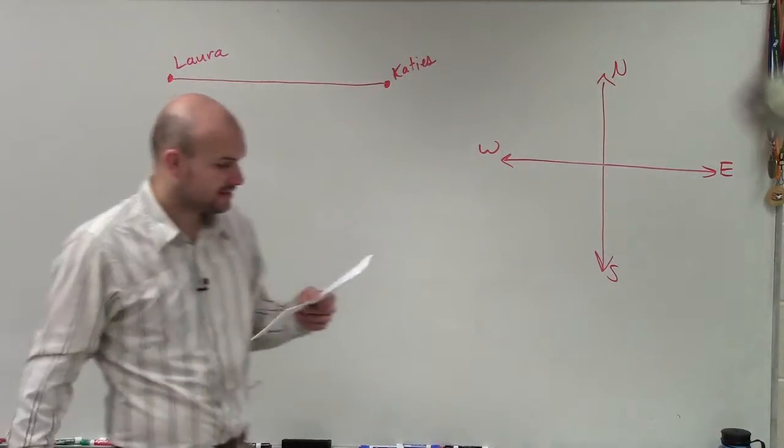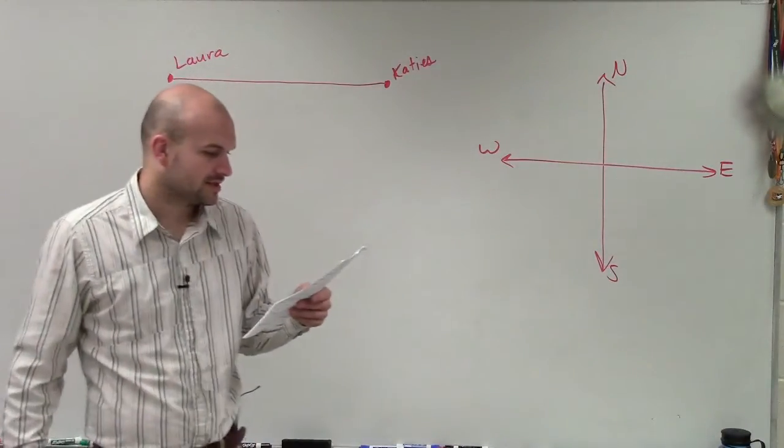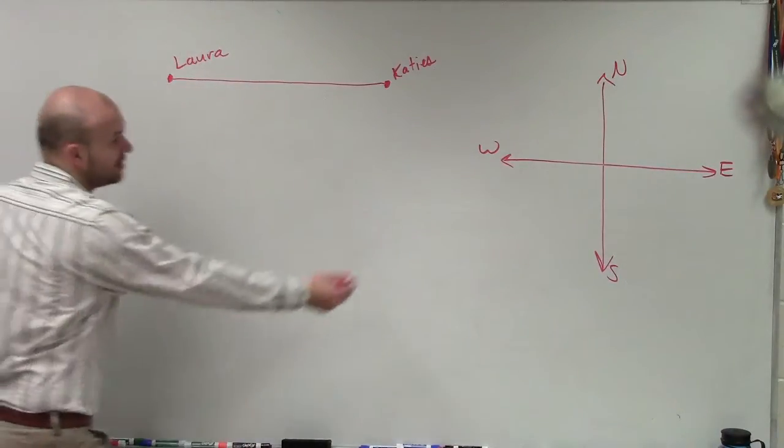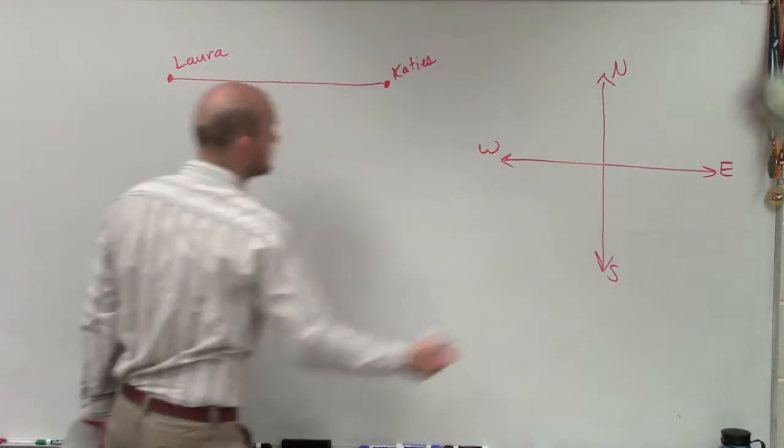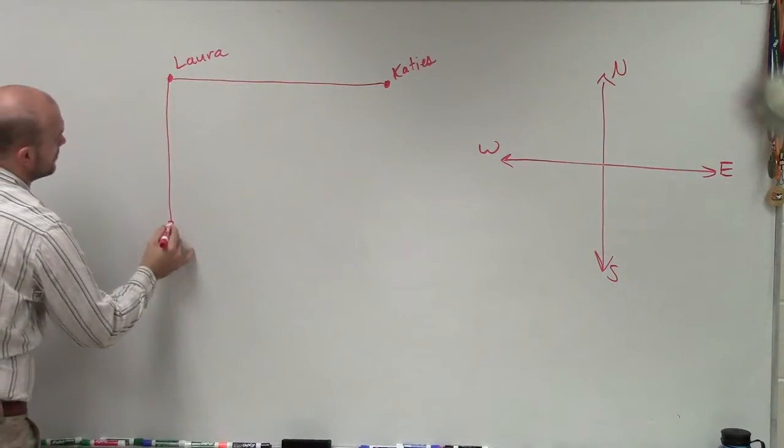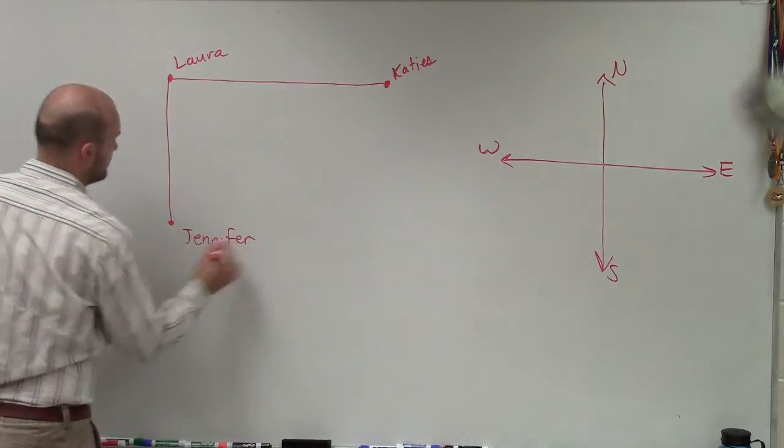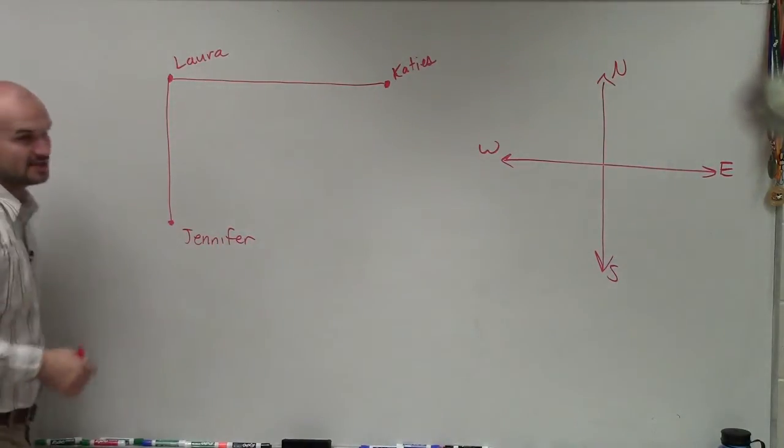And then, it says Jennifer's is 6 miles south of Laura's. Well, south is just directly down. You guys see that?